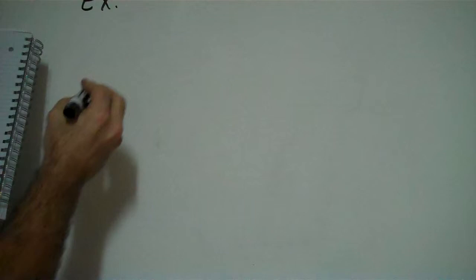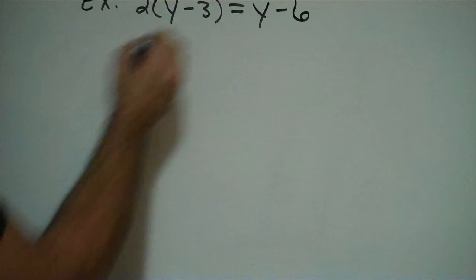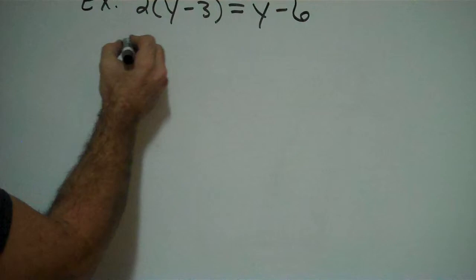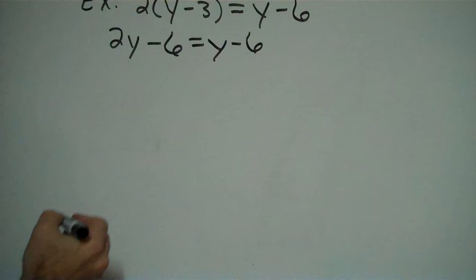Alright, let's see this next example. I got 2 and then parentheses y minus 3 equal to y minus 6. Before you can do anything else, you got to get rid of parentheses. So I'm going to do that by distributing that 2. 2 times y is 2y. 2 times negative 3 is negative 6. That's equal to the other side which was y minus 6.